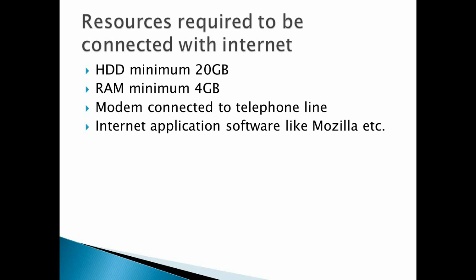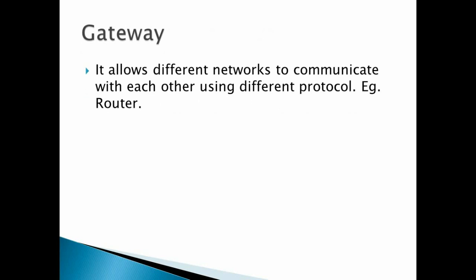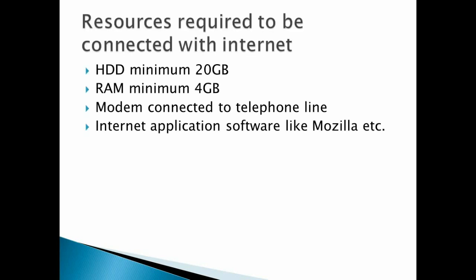Now there are other terms. Regarding hardware: hard disk minimum 20 GB, RAM 4 GB. Even computers with RAM as low as 1 GB or 2 GB can connect to the internet, but the book specifies 4 GB. Nowadays hard disks are minimum 512 GB, and RAM can also be less than 4 GB such as 2 GB. So these are just the minimum specifications listed.